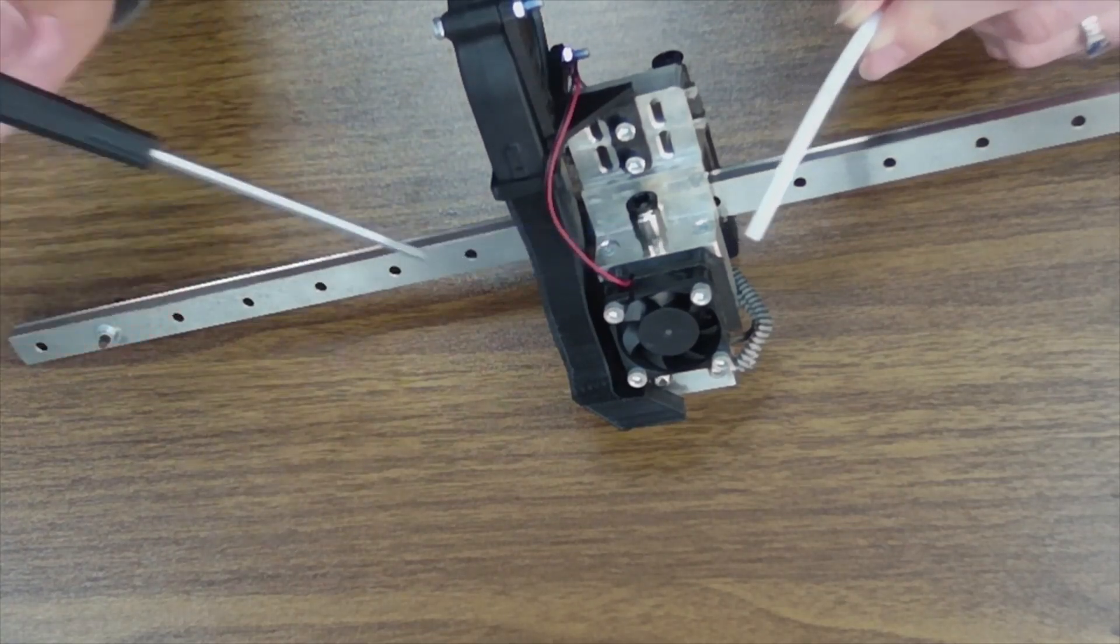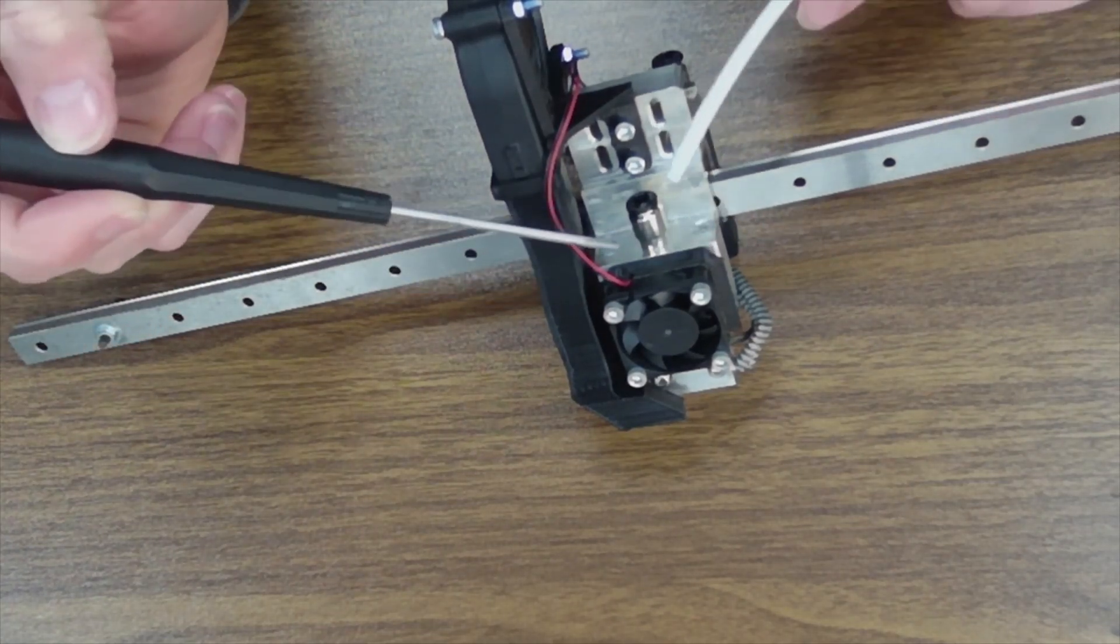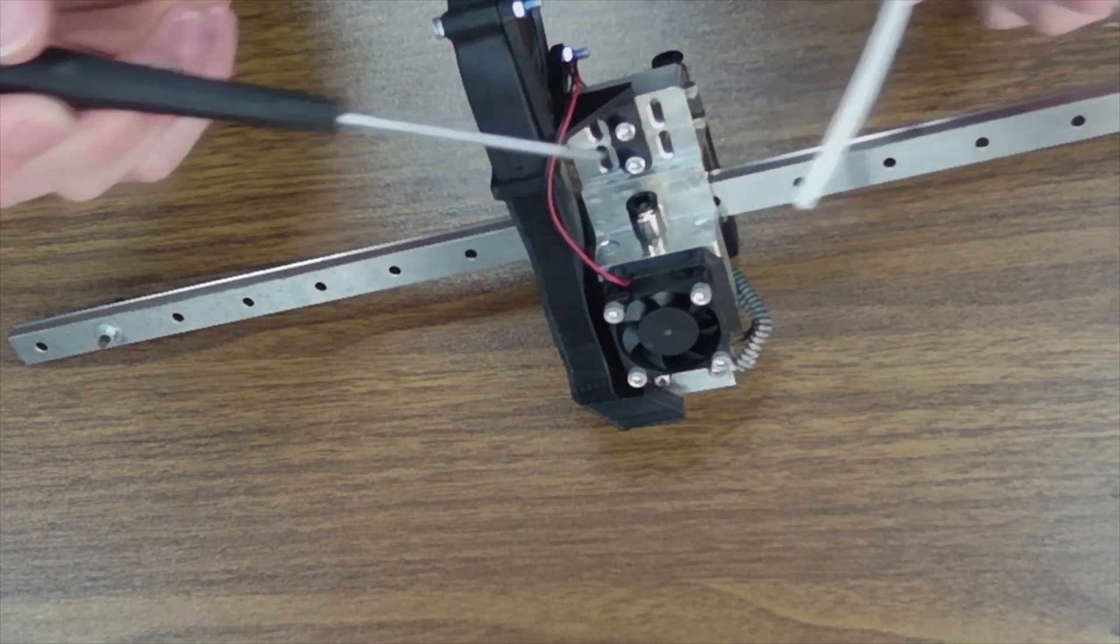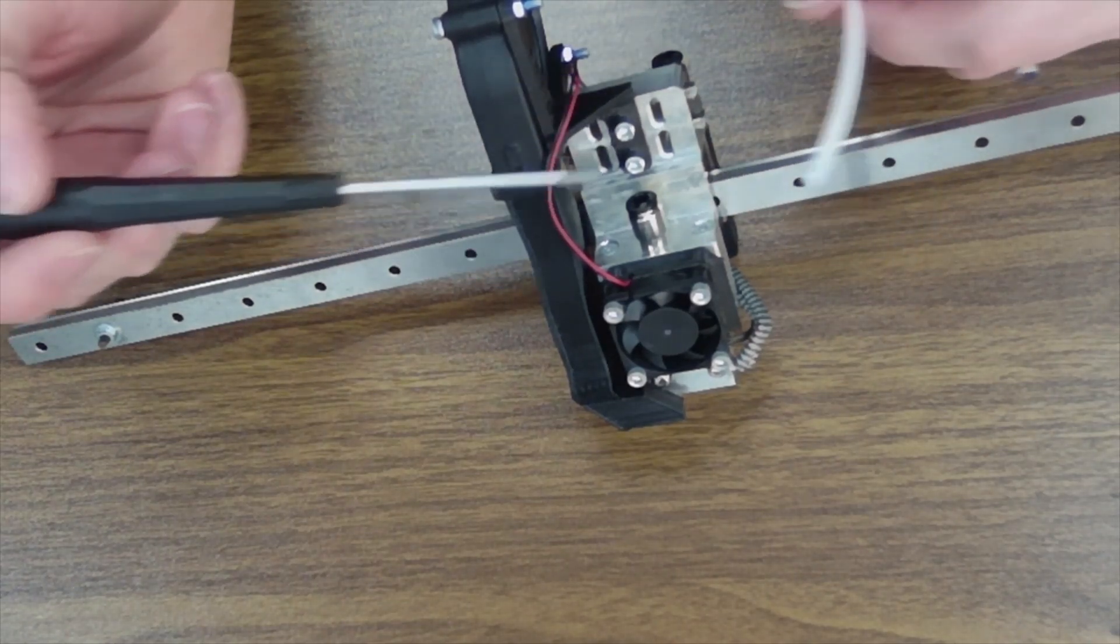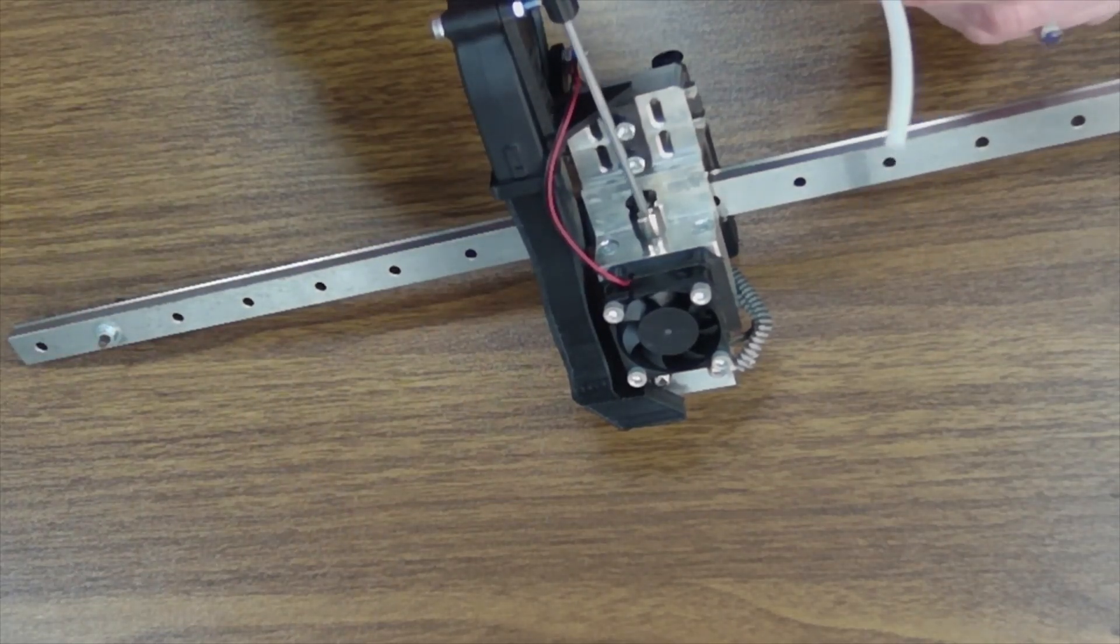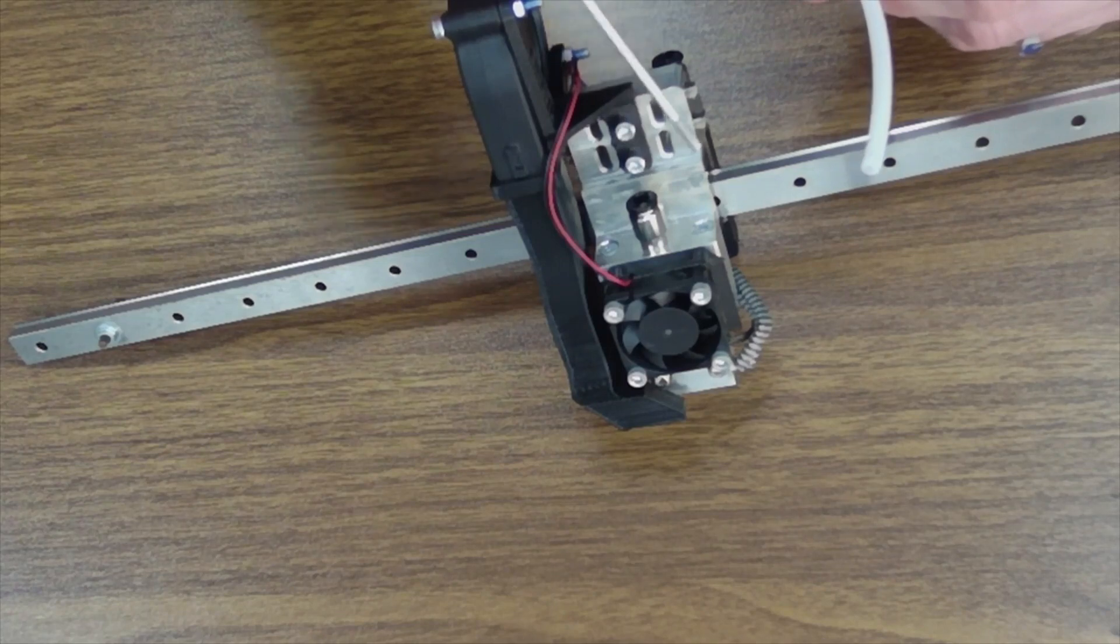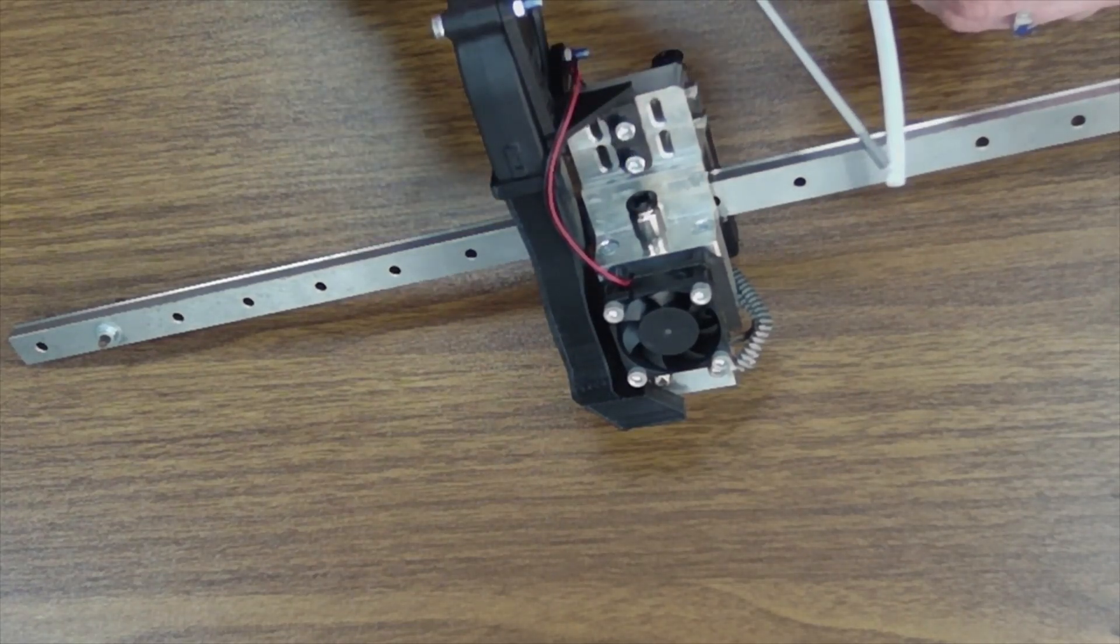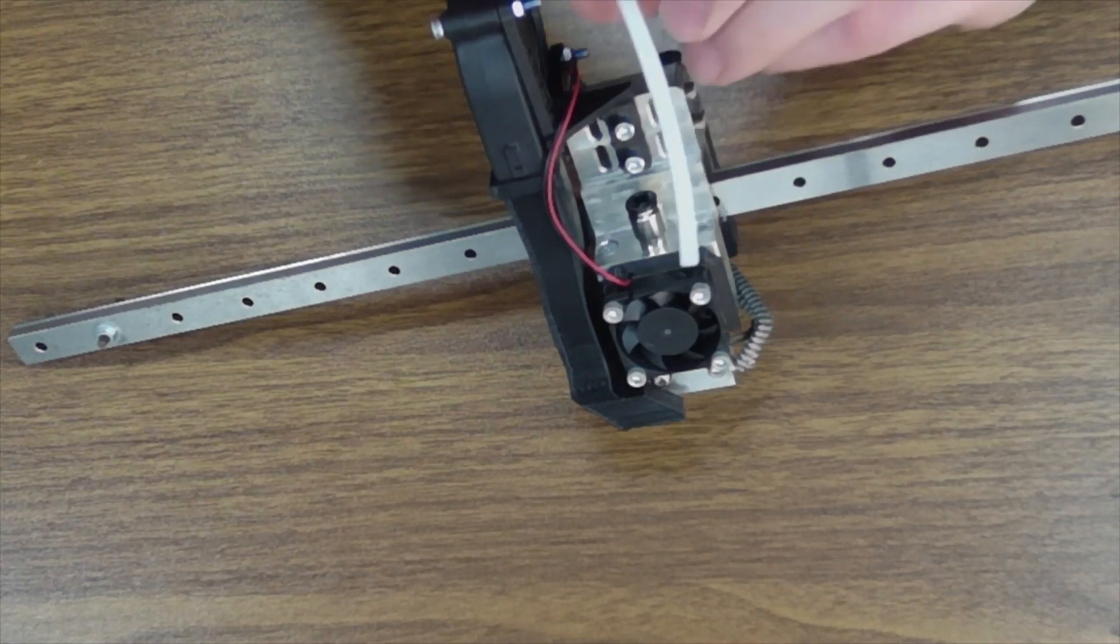So PTC fittings, it stands for push to connect fittings, are wonderful because they're really fast to get the tube in and out of. So if you need to remove a tube to service something, it's really quick and easy. The downside is the way these grab onto the tubes is they have a bunch of little knife blades inside, and these knife blades over time will cut into the tube.